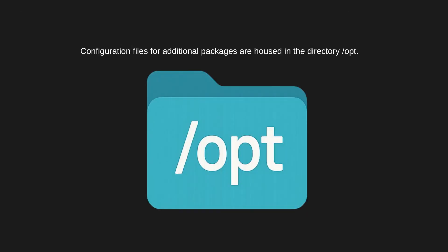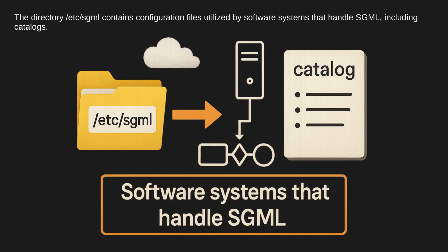Configuration files for additional packages are housed in the directory /opt. The directory /etc/sgml contains configuration files utilized by software systems that handle SGML, including catalogs.